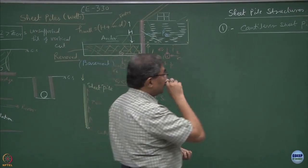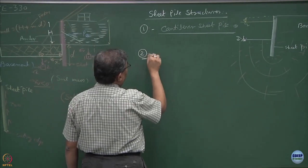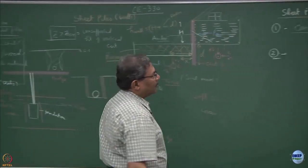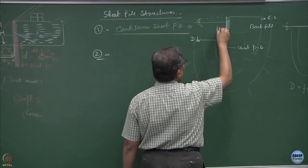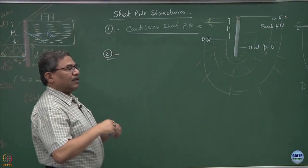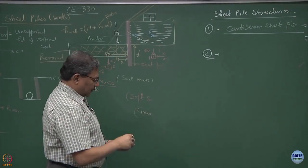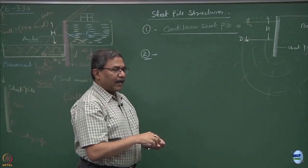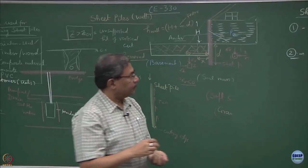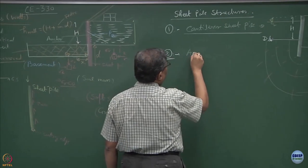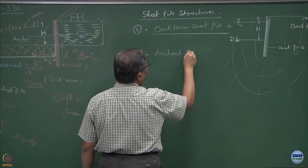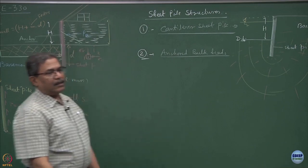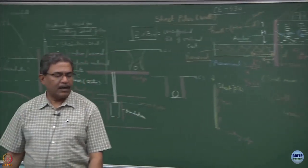Now look at this, how these problems can be amplified. Suppose if height of retention is more, if I am not very happy with whatever h I have created or if height of retention happens to be more than 5 to 7 meters, what I should be doing? The simple logic says put an anchor. So this becomes an anchored bulkhead, so this becomes the second type of the sheet pile.